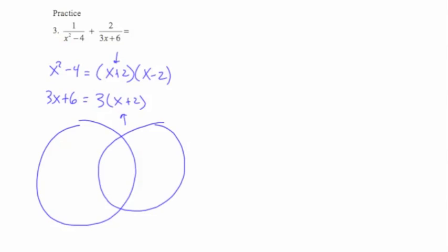My first circle is for x squared minus 4, my second circle is for 3x plus 6. The common factor (x plus 2) goes in the center. The only other factor for x squared minus 4 is (x minus 2) on the left. For 3x plus 6, the common factor (x plus 2) is in the middle, and the only other factor outside of that is 3. So my LCD is 3 times (x minus 2) times (x plus 2).